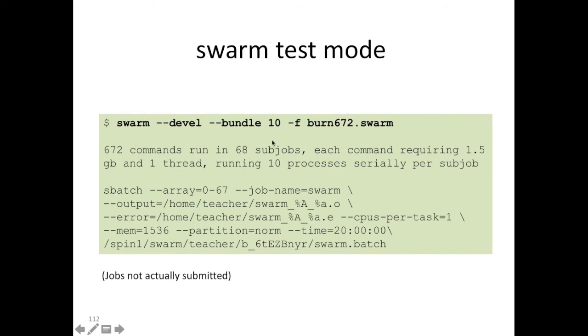And because of the bundle 10, it'll run 10 processes serially per subjob. And in case you're interested, this is the actual sbatch command that swarm would run on your behalf. But no job would actually be submitted.